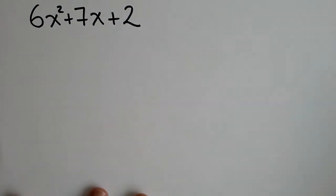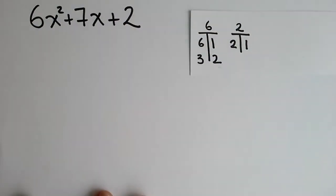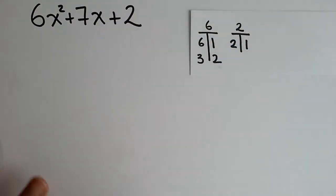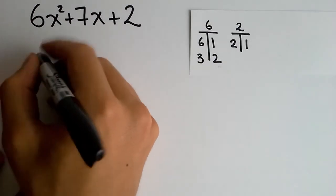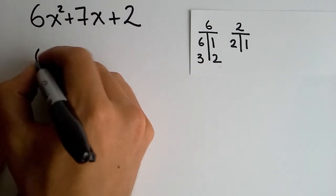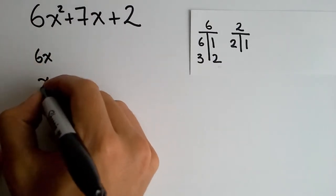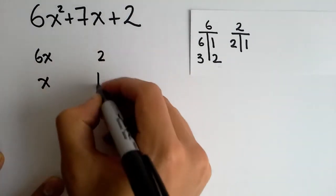In this case, you have 6 in your first term and 2 in the second term. So, the factors would be 6 and 1, 3 and 2 and 2 and 1. If you start writing things as columns, as I told you before, 6x squared can be written as 6x times x, while 2 can be written as 2 times 1.